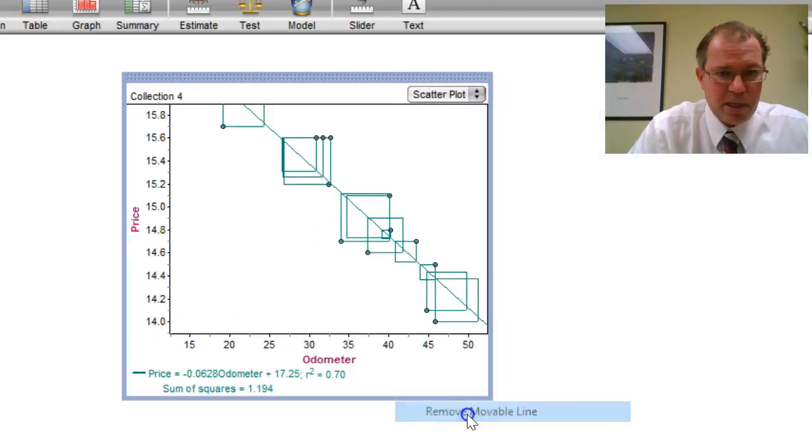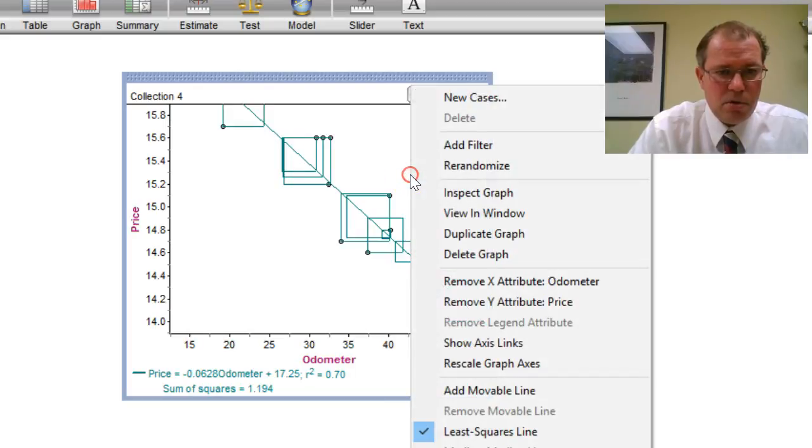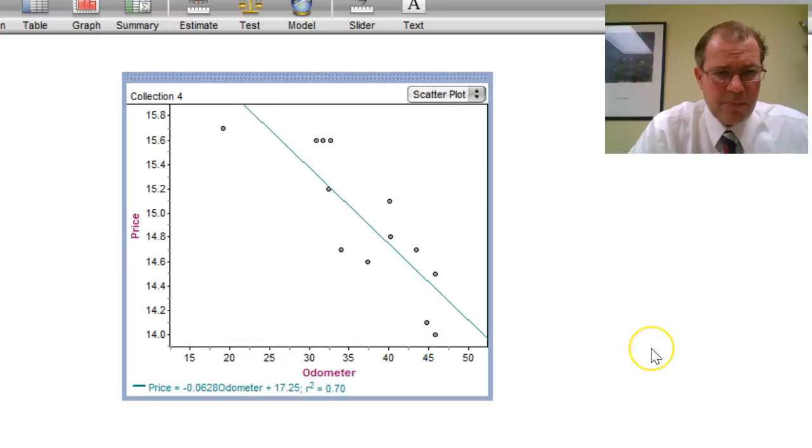So I'm going to remove the movable line. I'm going to now remove the squares. Because we don't need those now. And we have the best line of best fit. Which is called the least squares line. And that was the theory of it. Remember that the least squares line was caused by finding the vertical distances and making squares. That's going to be really important later in this video.